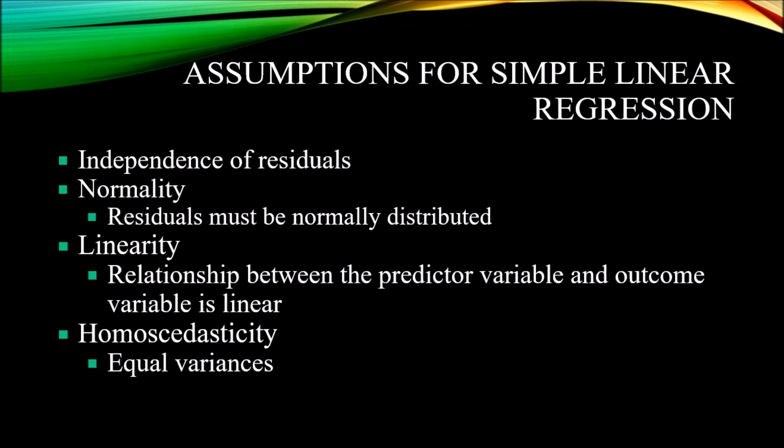The next assumption is the assumption of linearity. And that means that we have a linear relationship between the predictor variable and the outcome variable. So we can assess the assumption of linearity using a scatter plot. And we're looking at the points plotted on the scatter plot and assessing whether they essentially form a straight line or not. We want to make sure that the relationship between the predictor variable and the outcome variable is not curvilinear.